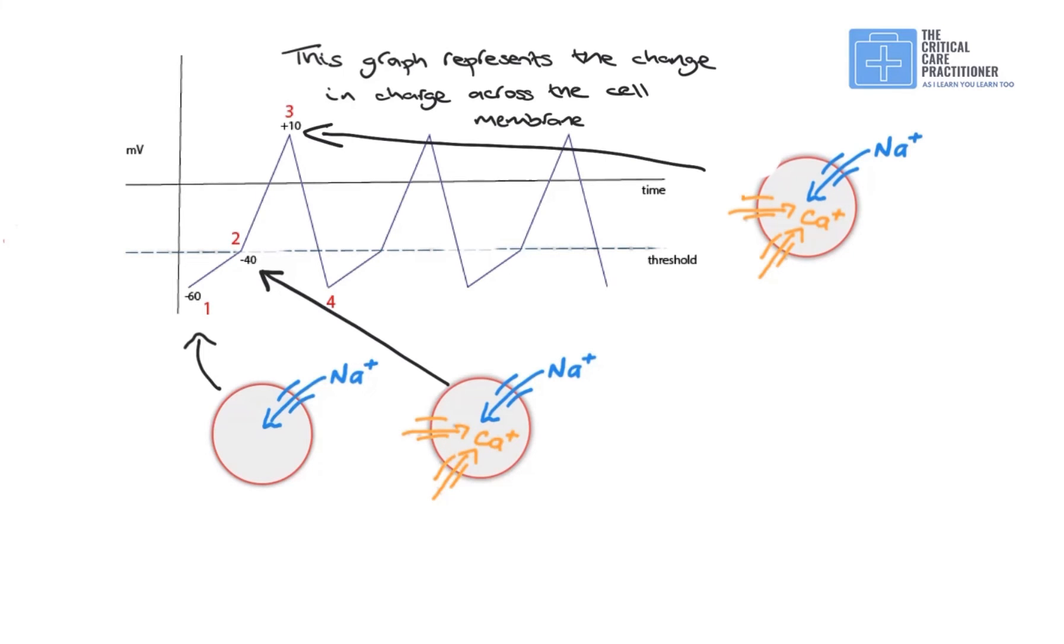And what happens at point three is that those calcium channels then close. So we've got less positive calcium going into the cell. And at the same time, we have potassium channels which open, allowing potassium out of the cell quite quickly. So now what happens is we're losing positive charge from within the cell to outside the cell, making the action potential or the difference between the charge now become much more negative very, very quickly. And it's this which causes the muscles to twitch.